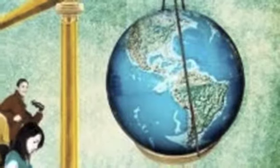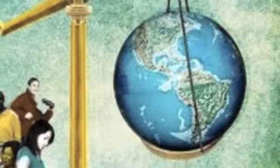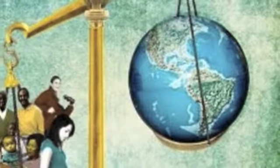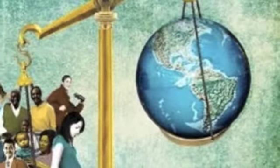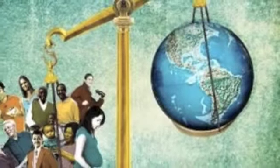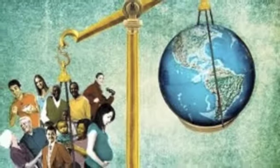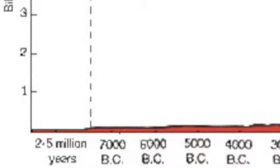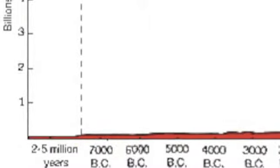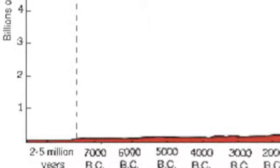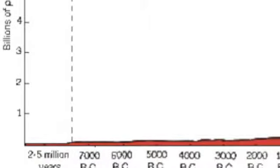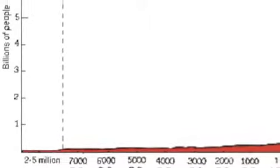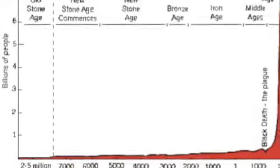Overpopulation is a state of having a very dense population such that it leads to social and economic problems. India's current population is over 1.28 billion. India is the second largest country by population.